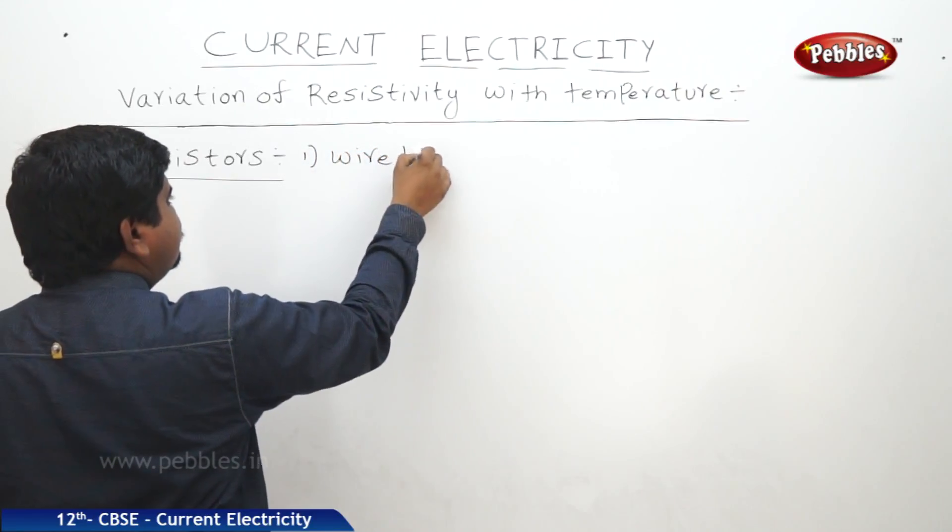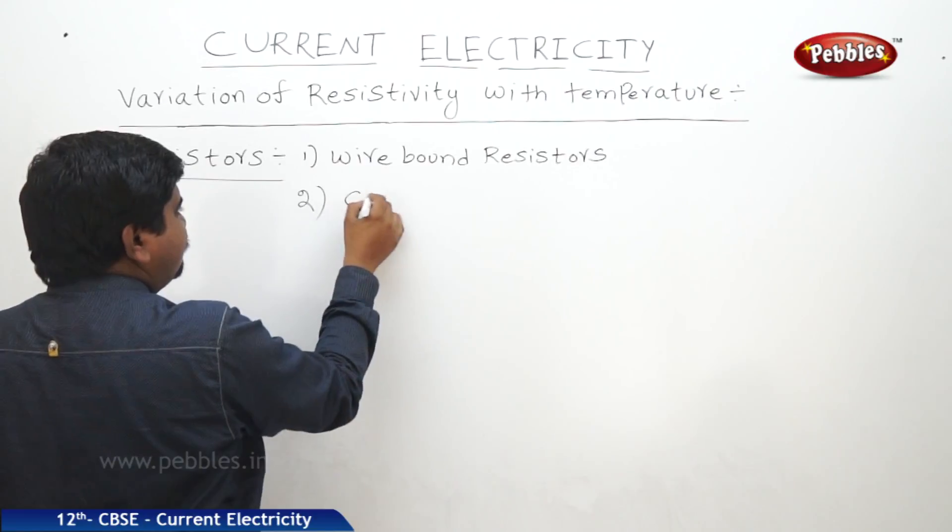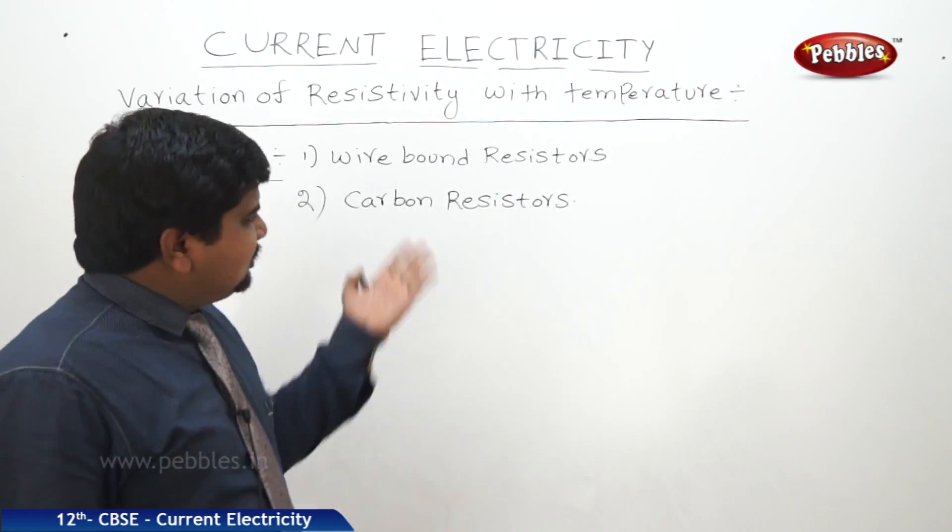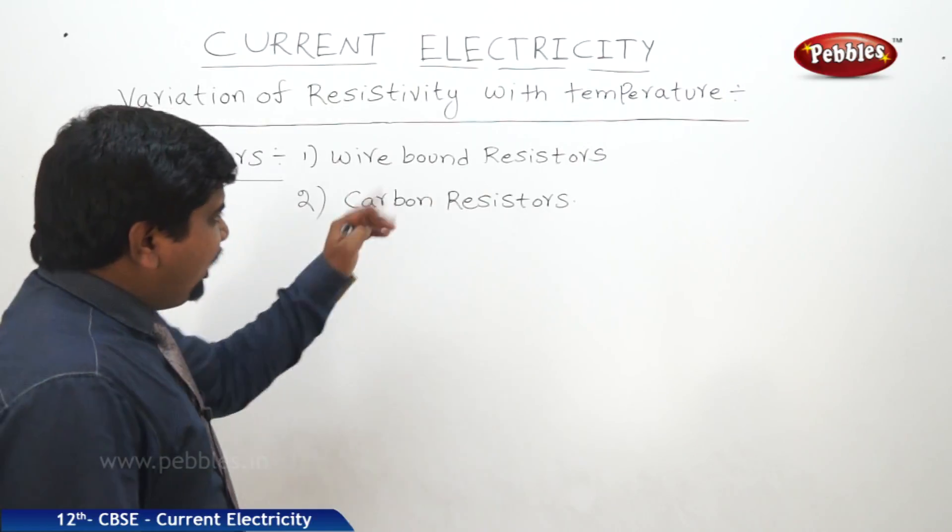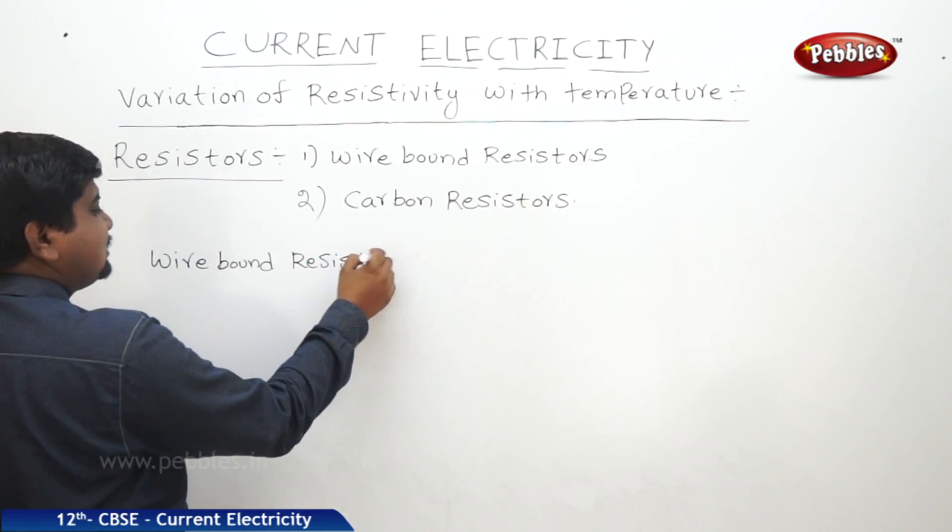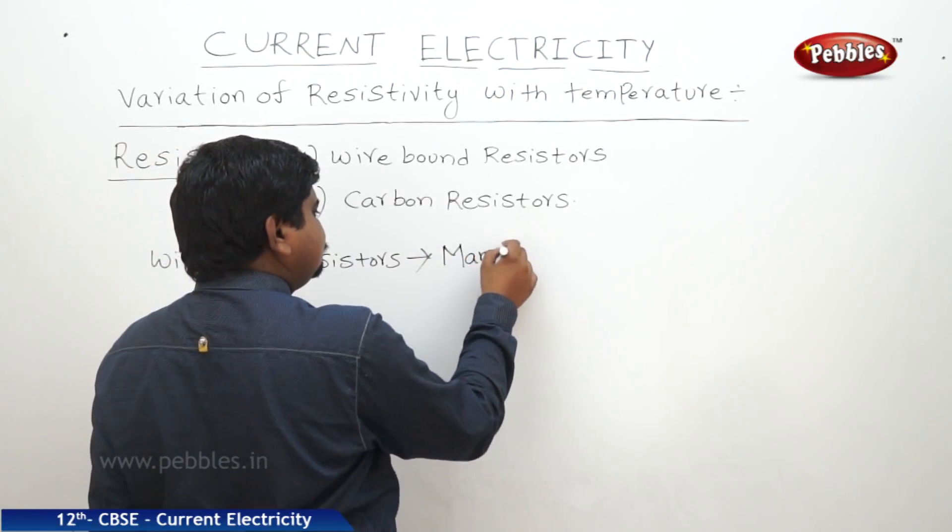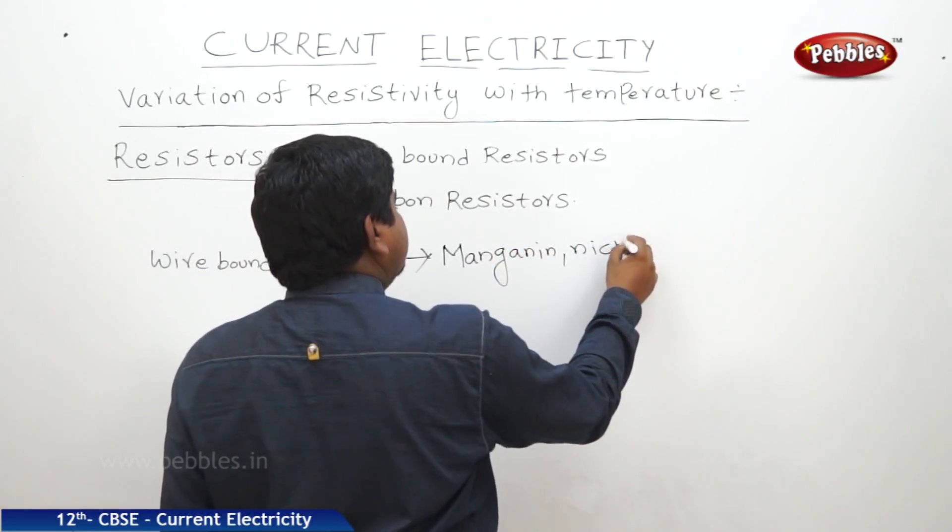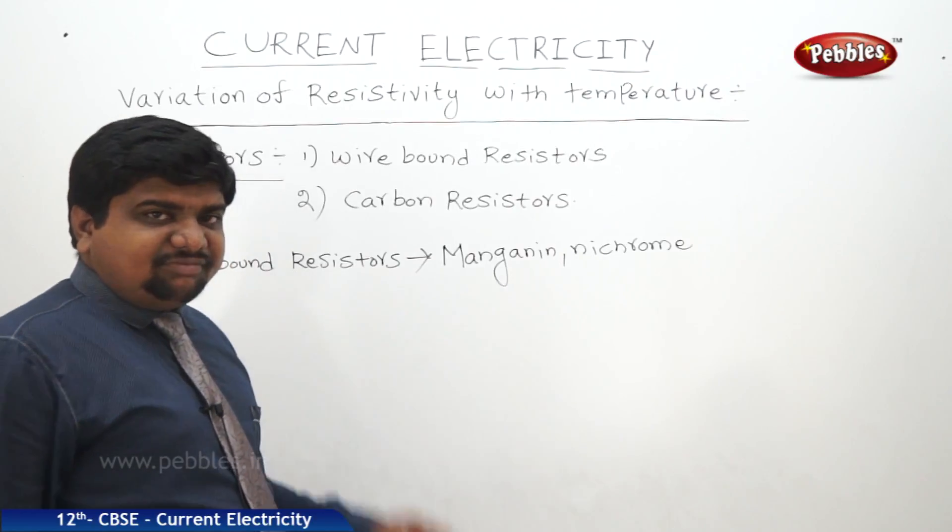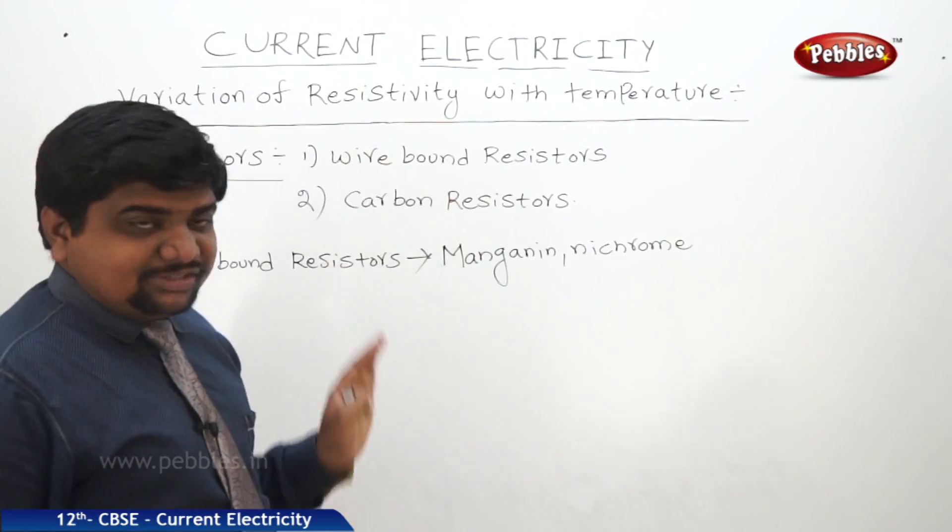Which resistor to use in a circuit depends on its resistivity. Wire bound resistors are made up of an alloy of manganin, aluminum, and nichrome. Carbon resistors use carbon-type materials to produce these resistors. Wire bound resistors are made of an alloy used based on its resistivity.